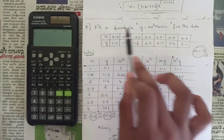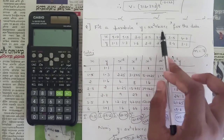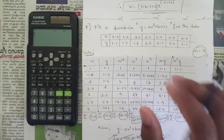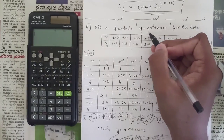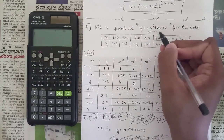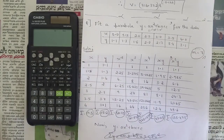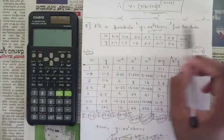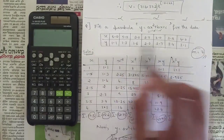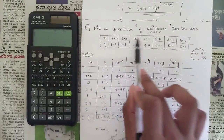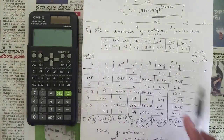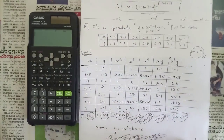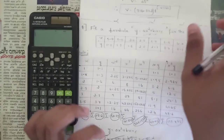The next question asks: fit a parabola of the form y = ax² + bx + c. Sometimes they give a specific equation. Using that equation we substitute into the normal equations and solve. The data has x and y values with number of observations n = 7.